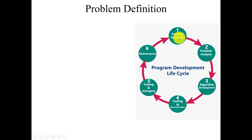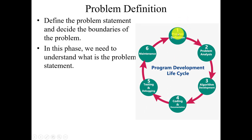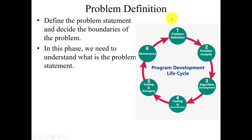The first phase is problem definition. It defines the problem statement — what exactly the problem is while we are doing programming — and decides the boundaries of the program. Boundaries refer to what limitations occur while programming. In this phase we need to understand the problem statement, the exact limitations, and the boundaries.